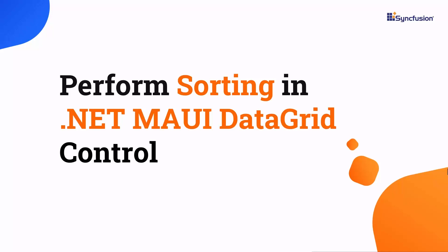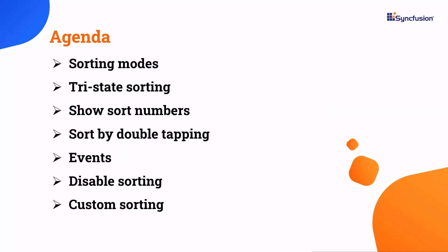Hi everyone, welcome back. In this video, I will show you how to sort the data in .NET MAUI Data Grid. I'll also show you how to enable tri-state sorting, display sort numbers, sort columns by double tapping, and handle sorting events. Additionally, I'll show how to disable sorting in individual columns and sort columns based on custom logic.